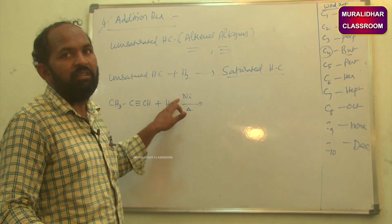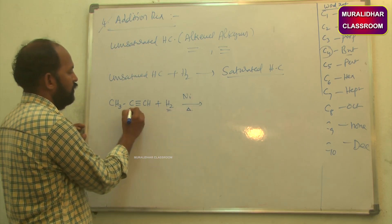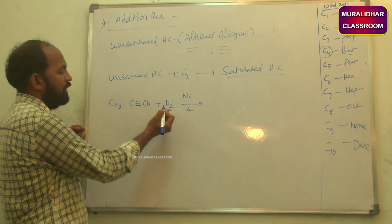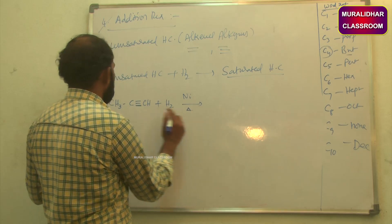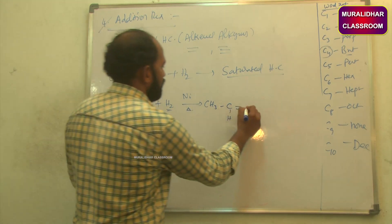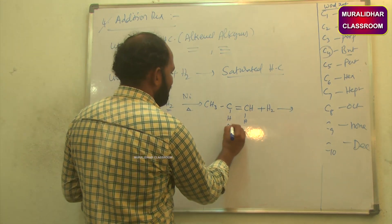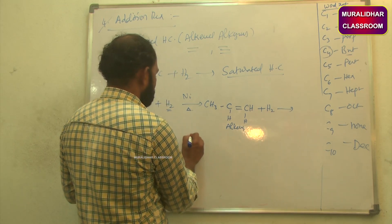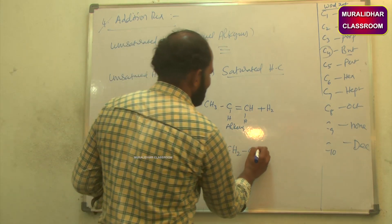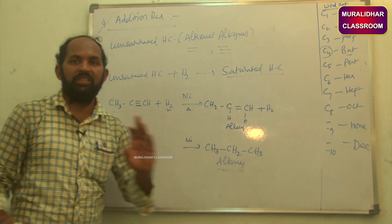The catalyst cannot undergo any chemical change. Nickel breaks the H2 molecule, the pi bond of the triple bond breaks, and two hydrogen atoms attach to the two carbons, converting the triple bond to a double bond (alkene). Adding another H2 converts the alkene to an alkane — a saturated hydrocarbon. Thus unsaturated hydrocarbons are converted into saturated hydrocarbons.